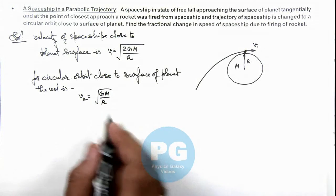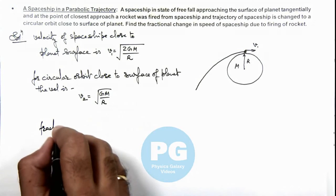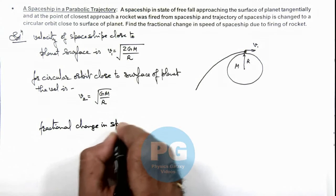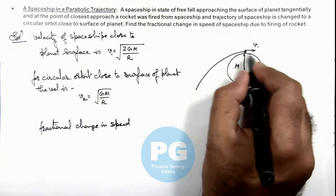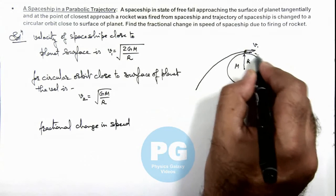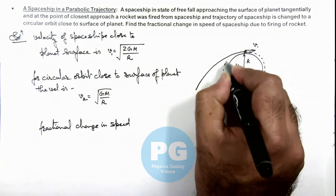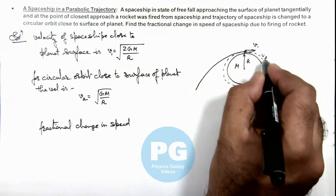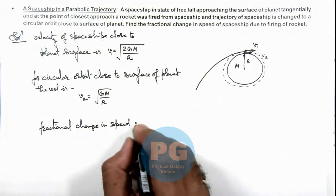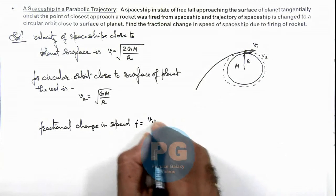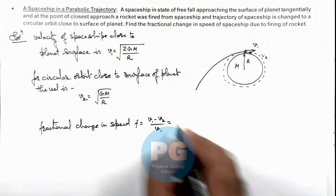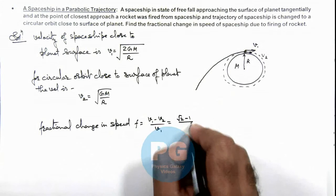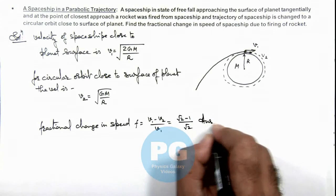So here we can find out the fractional change in speed. You can see v1 changes to v2, then it starts following a circular trajectory surrounding the planet close to its surface, so it follows speed v2. The fractional change can be given as (v1 minus v2) divided by v1. On substituting the values, this gives us (root 2 minus 1) divided by root 2, and this will be the result of this problem.